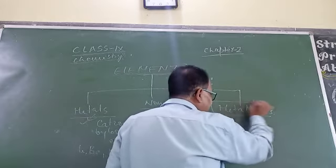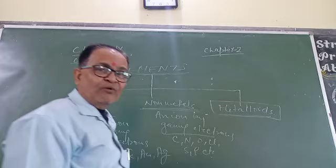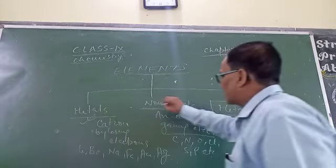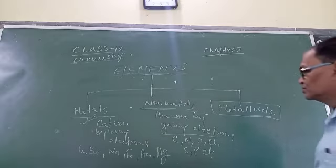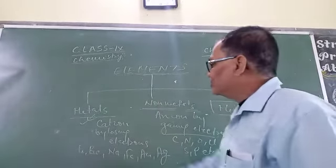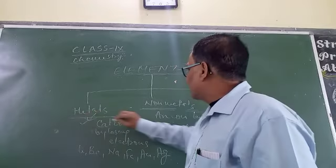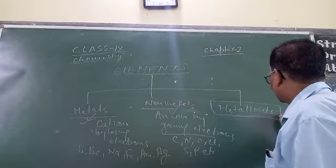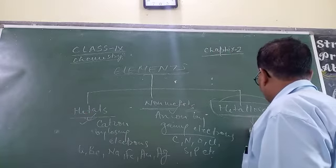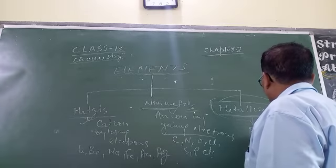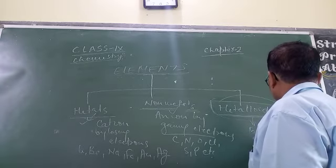Metalloids are the elements having properties of metals and non-metals both. The elements which show some properties of metals and some properties of non-metals are called metalloids. For example, boron, germanium, silicon, etc.